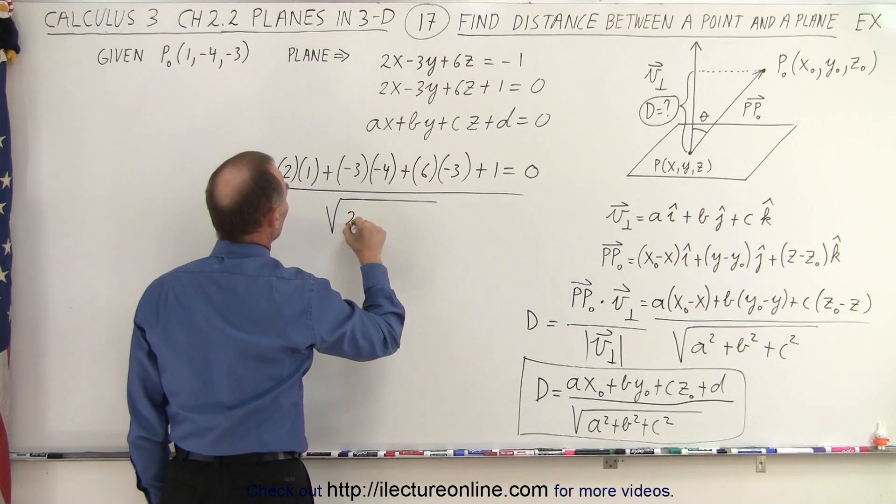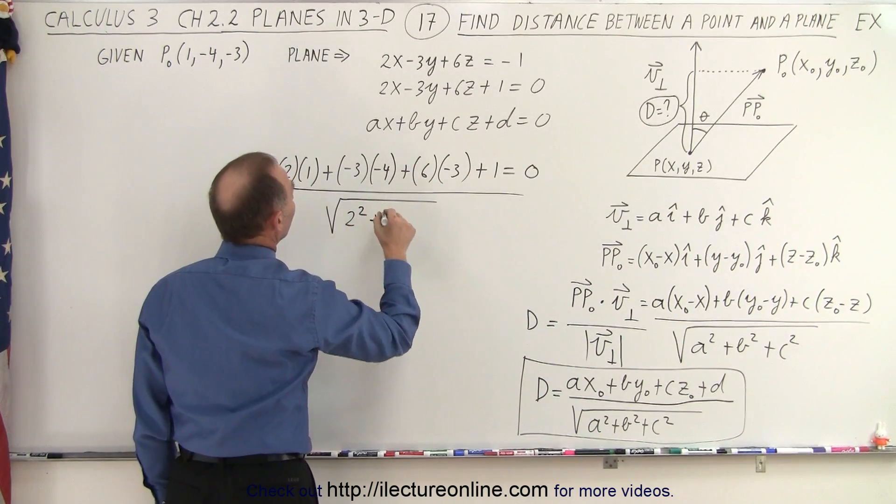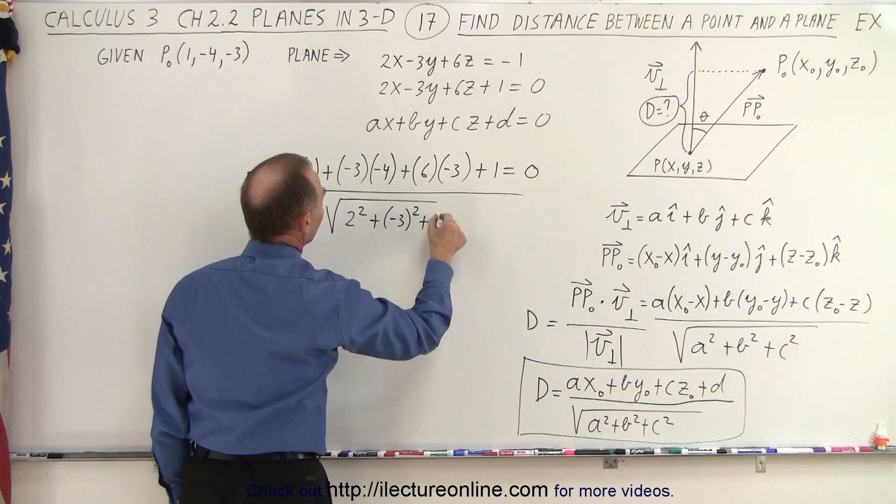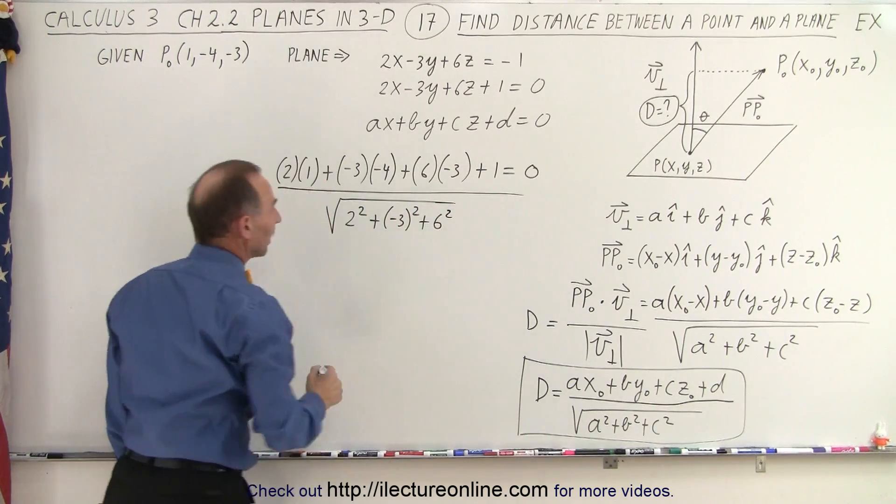So a is equal to 2, so we get 2 squared, plus b, which is a negative 3, squared, plus c, which is 6 squared.